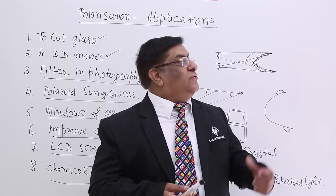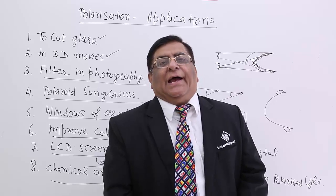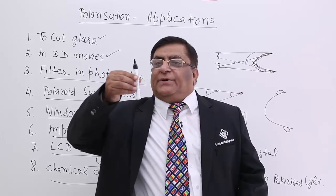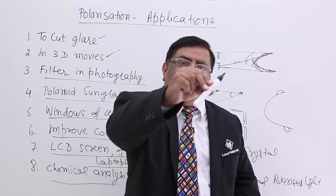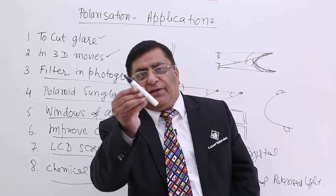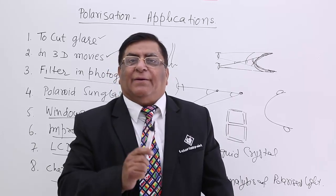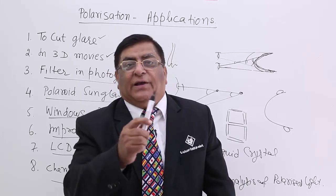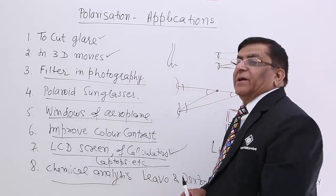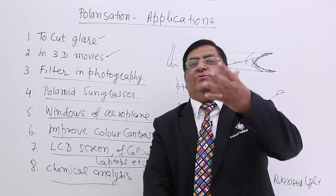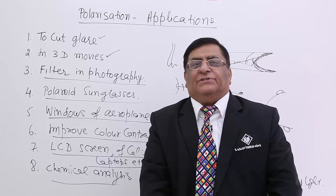Again polaroids are used in LCD. Also in chemical analysis - you have seen the light turning due to polarization. The vibration direction of light passing through a crystal will turn. In some crystals it turns one way - we call this Levo - and another turning is called Dextro. You have studied it in chemistry. Levo and Dextro refer to the turning of vibrations, which is polarization, and that helps us to do chemical analysis of many chemicals. So there are many uses of polarization, and new uses are being searched. This was all about applications of polaroids.